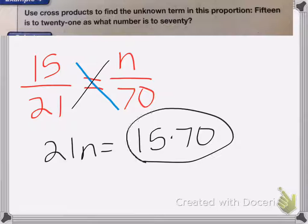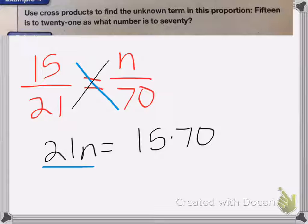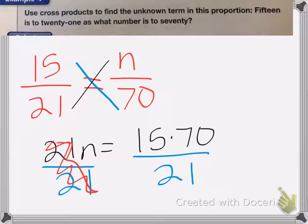You notice I haven't multiplied 15 and 70 together yet because it's easier to simplify before multiplying. Now I need to divide both sides by 21 to get the n by itself. 21 over 21 cancels out. So I'm left with n equals 15 times 70 divided by 21.